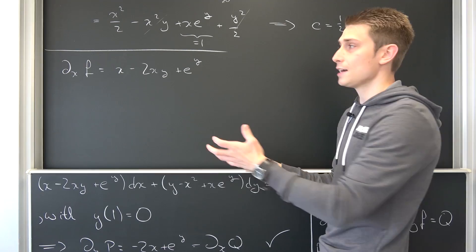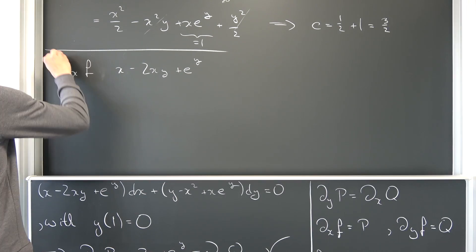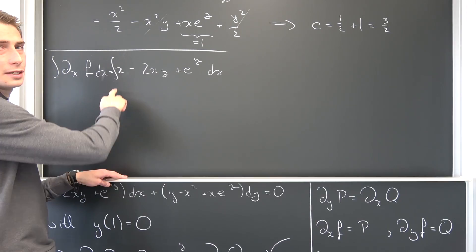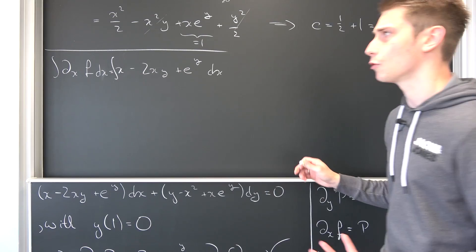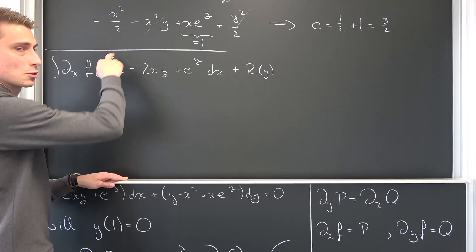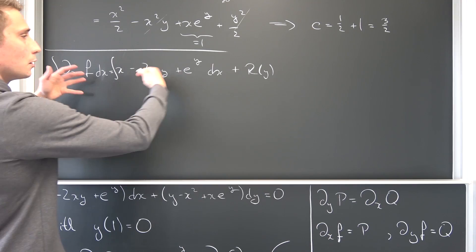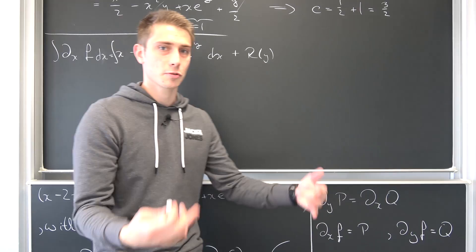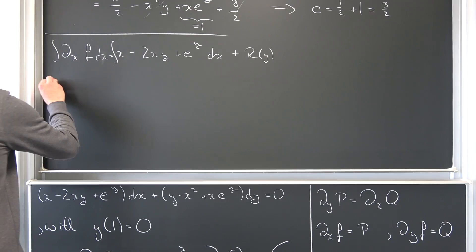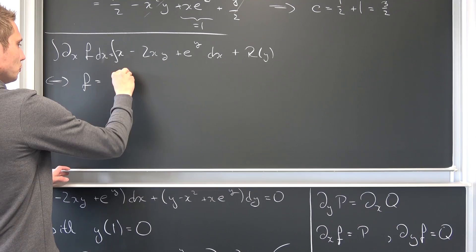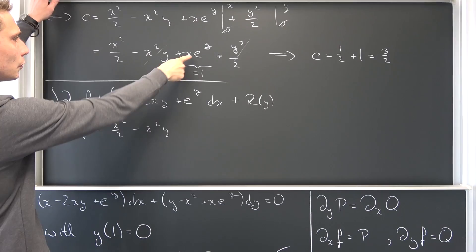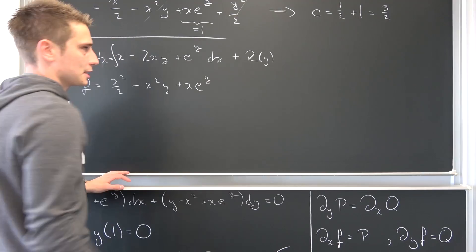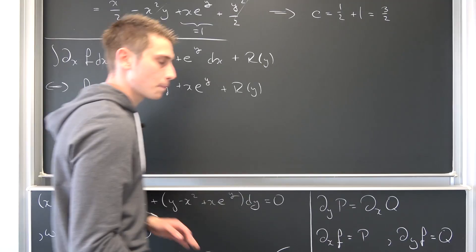What we did in the constructed proof is basically just integrate both sides with respect to x to get our f. So if we just integrate both sides with respect to x, you can either plug in initial conditions or just leave it as some random remainder function r(y). You can also integrate from x-naught to x, and then you can simply get rid of this r(y). On the left-hand side, if you differentiate a function with respect to x and then integrate it with respect to x, you are left with the function itself. So f is thus nothing but x²/2 − x²y + x·e^y + r(y).